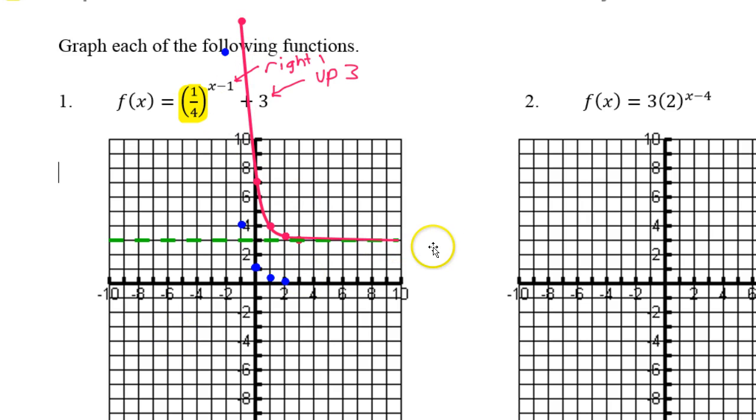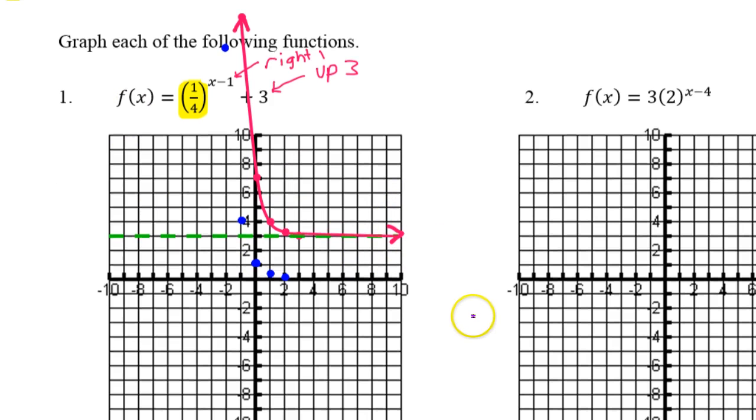Now I'm going to try to draw my curve, which should pass through these points and approach the asymptote. Your curve should look something like this. Let's go ahead and put arrows on the end to show that it keeps going forever in these directions. That is it for number 1.